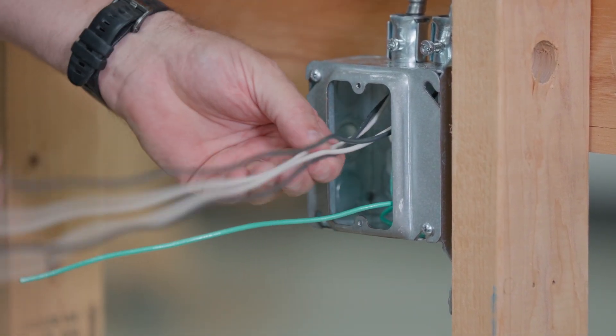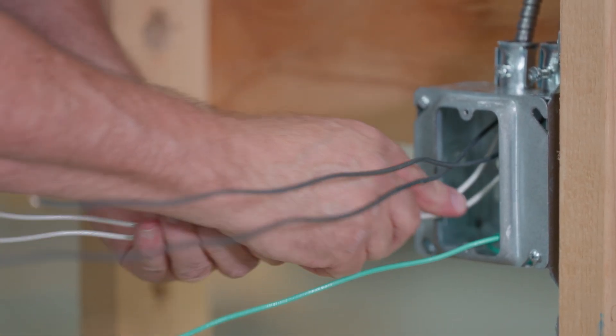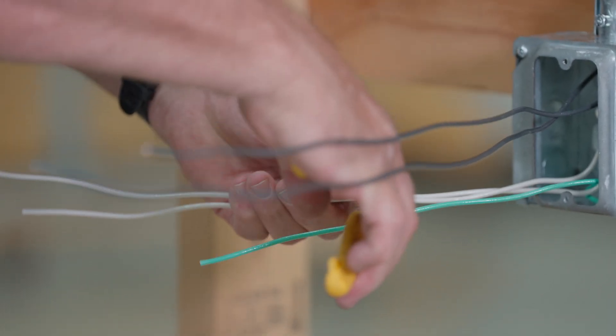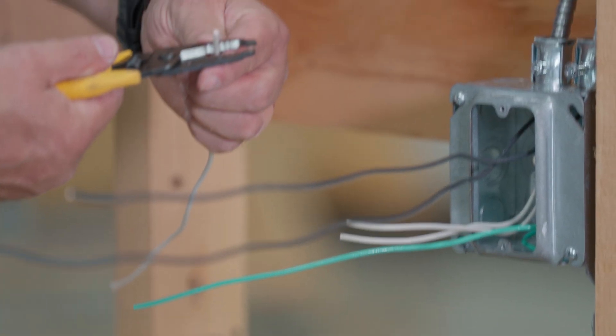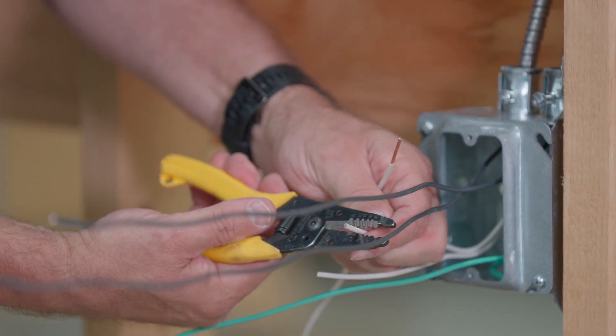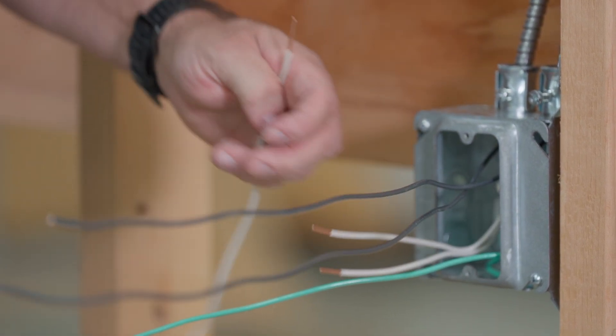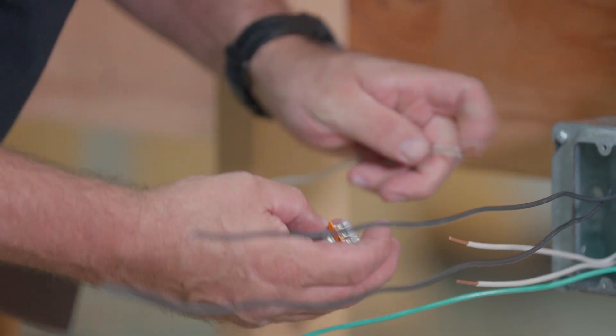And then we're going to do the same thing for the white neutral or grounded conductors, depending on what circuit it is. We're going to take these, we're going to cut them. We'll grab one of these pieces here for the pigtail. We're going to strip these wires.